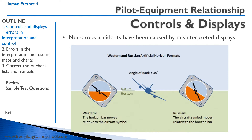Some aircraft have different instruments, or instruments that are displayed differently. Here's an example comparing a Western and a Russian artificial horizon. In a Western artificial horizon or attitude indicator, the horizon moves up and down on the aircraft — the aircraft is shown in a banked attitude and the horizon remains the same. However, in a Russian artificial horizon, the horizon stays in plane with the aircraft and the aircraft moves on the horizon bar.